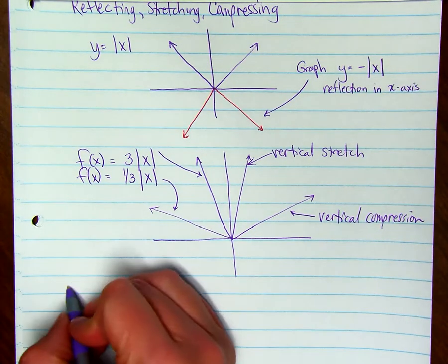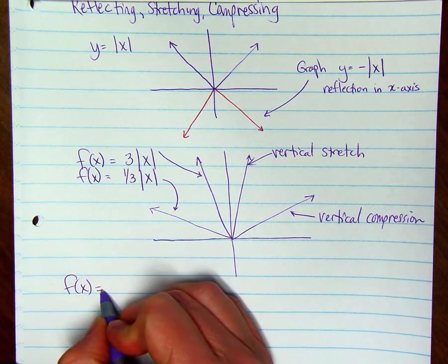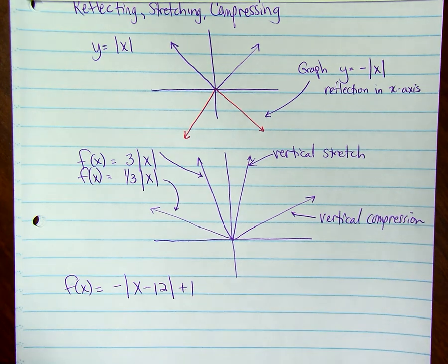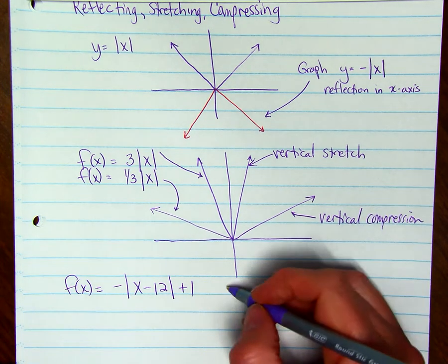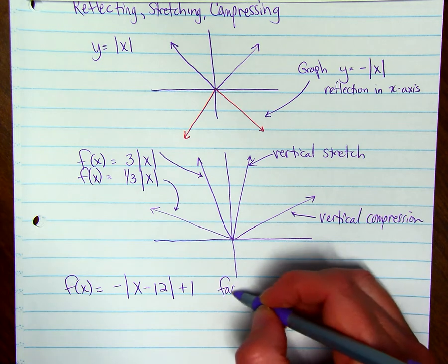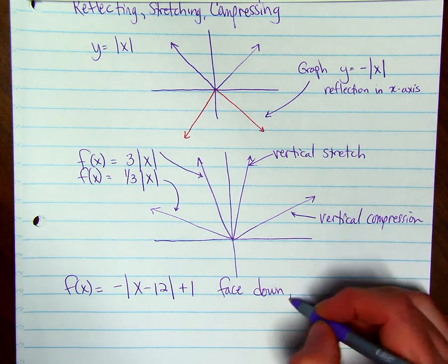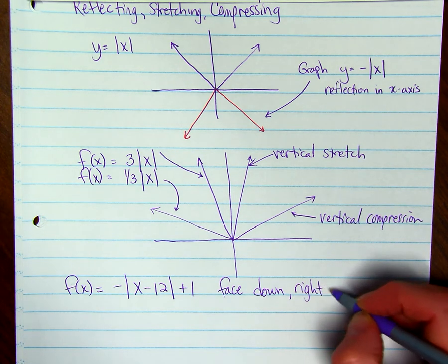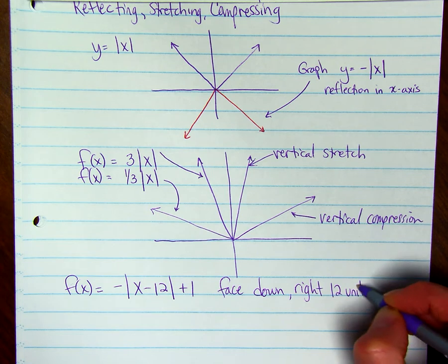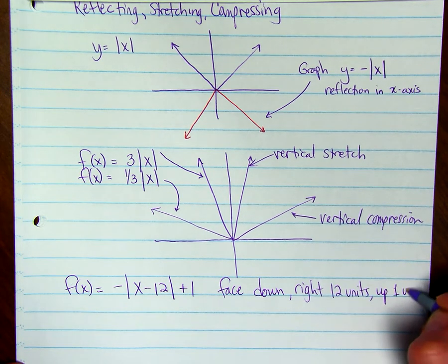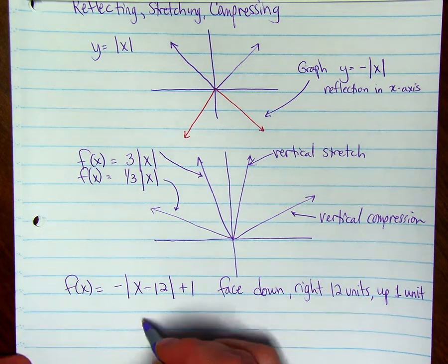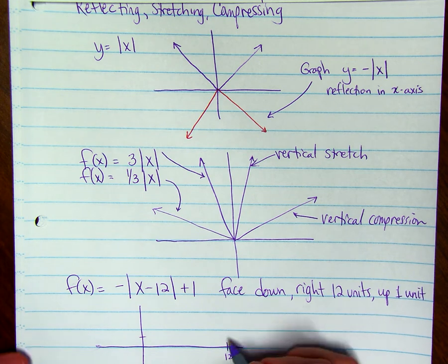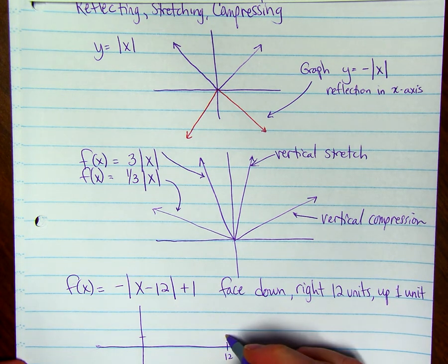Putting it all together: f of x equals negative absolute value of x minus 12, plus 1. It's going to face down because of the negative — reflected in the x-axis. It moves to the right 12 units, and up 1 unit. So the vertex goes to 12, 1, facing downward.